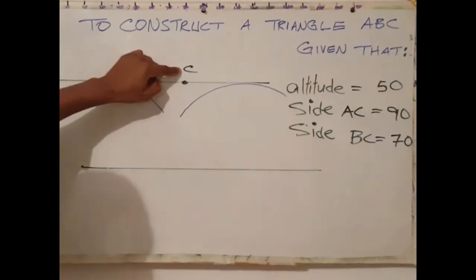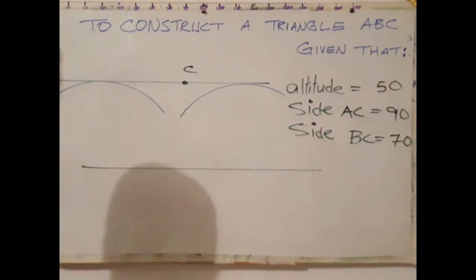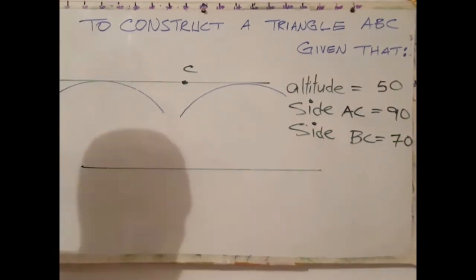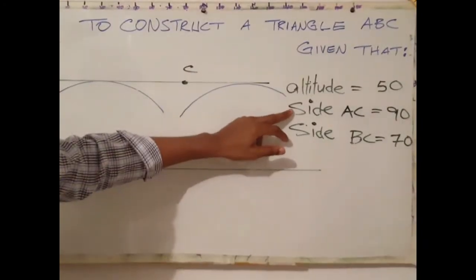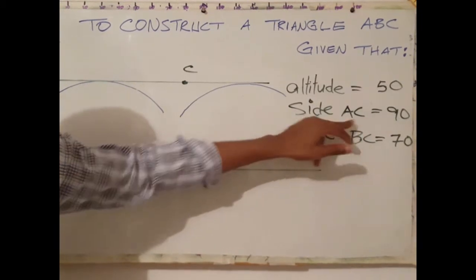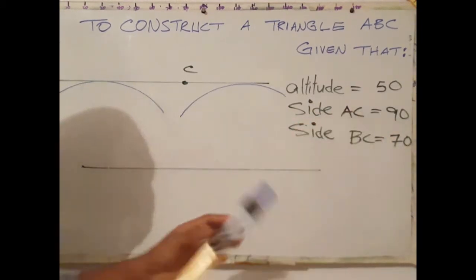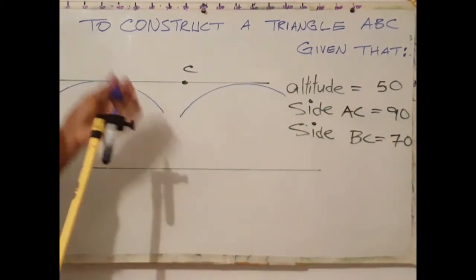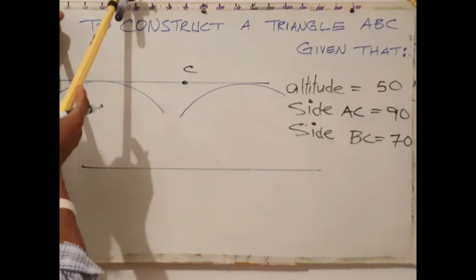Here is C. The next step is to draw side AC. AC is 90 millimeters, so open your compass to 90 millimeters.